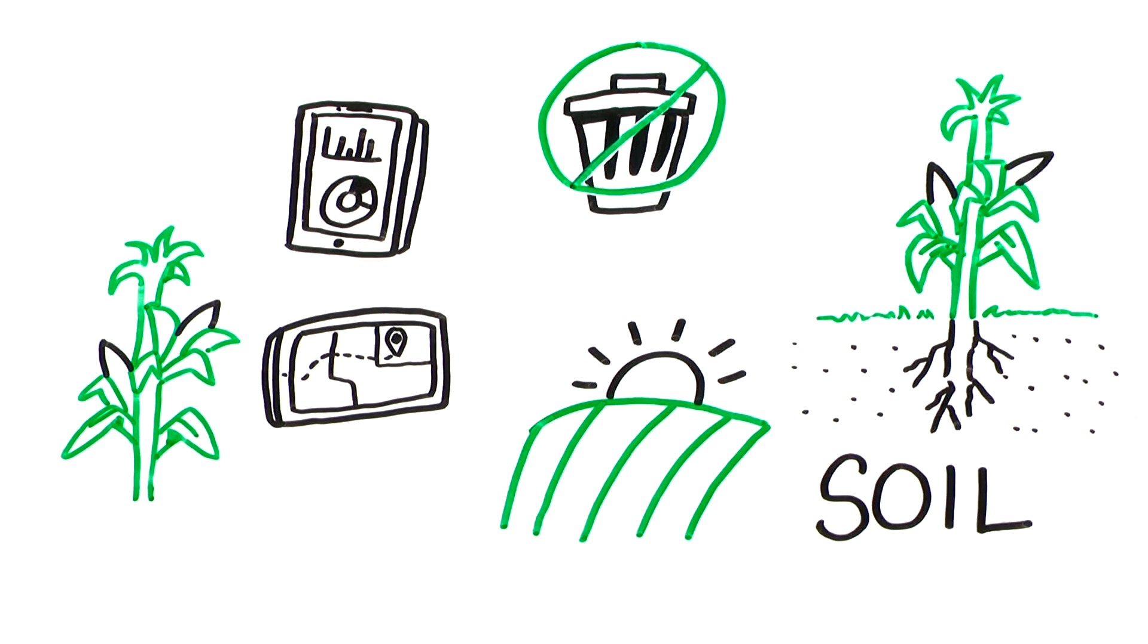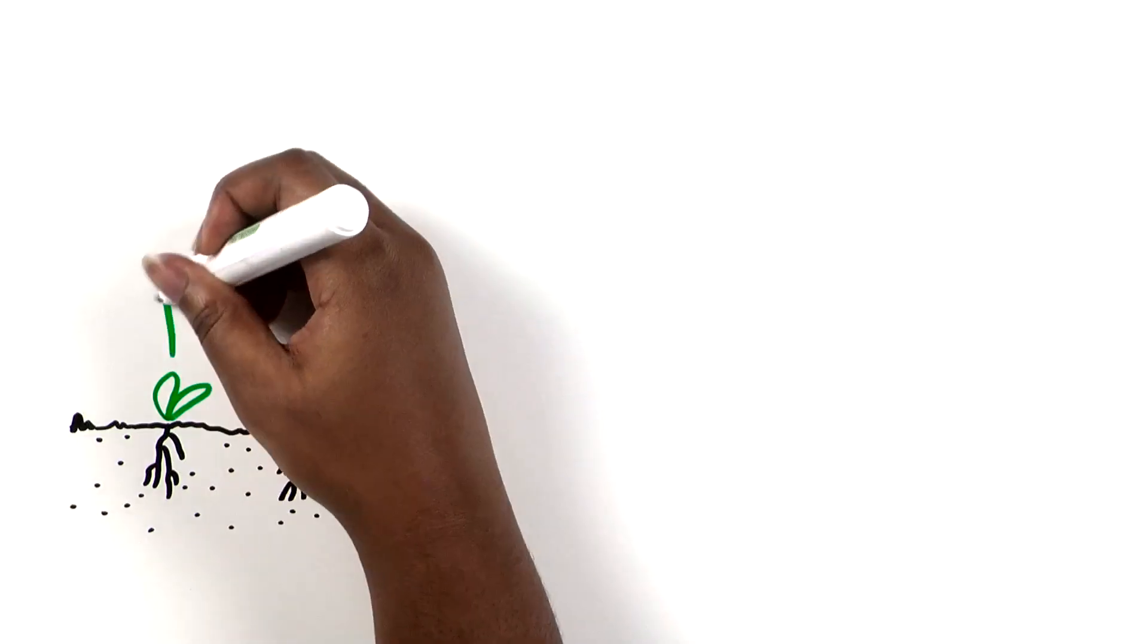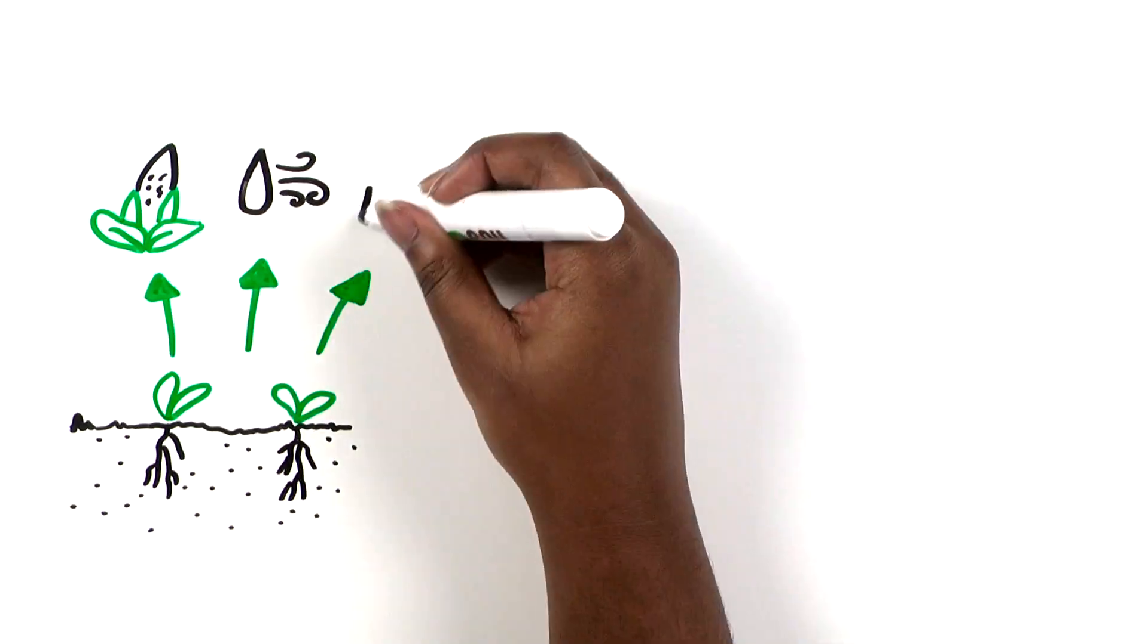Soil. There's a growing movement to enhance the ecosystem of soils on the farm. Healthier soils can provide abundant food, improve air and water quality, and boost farm income.